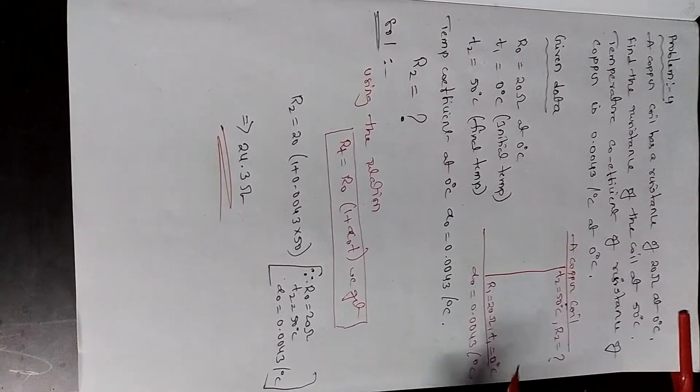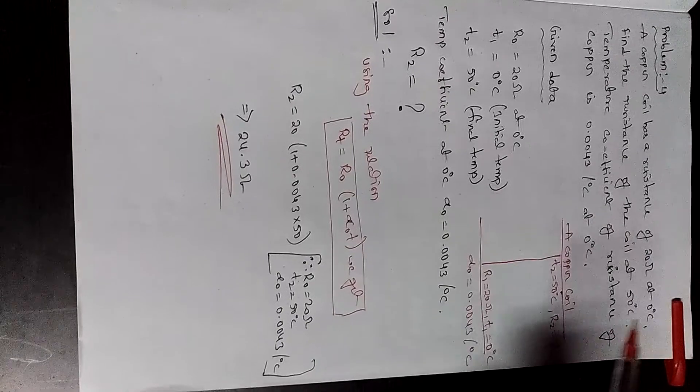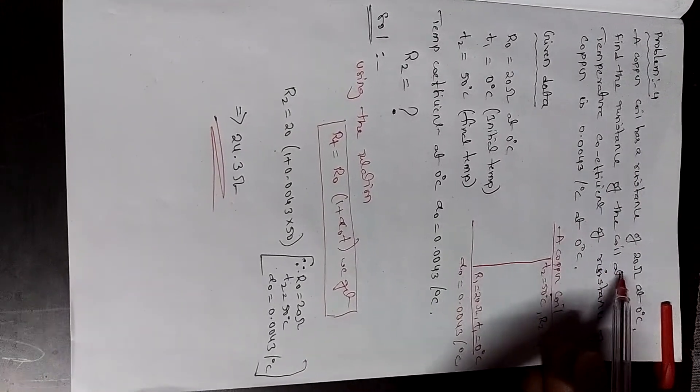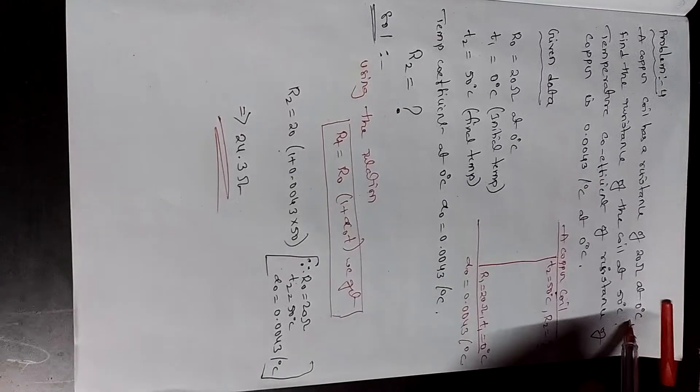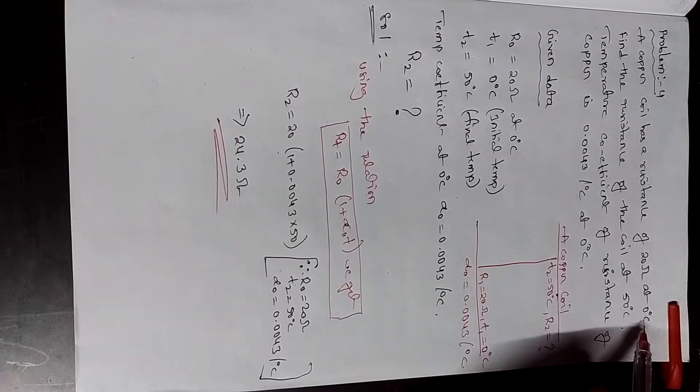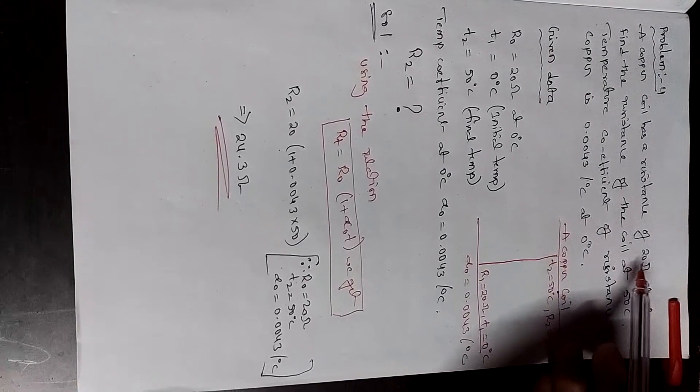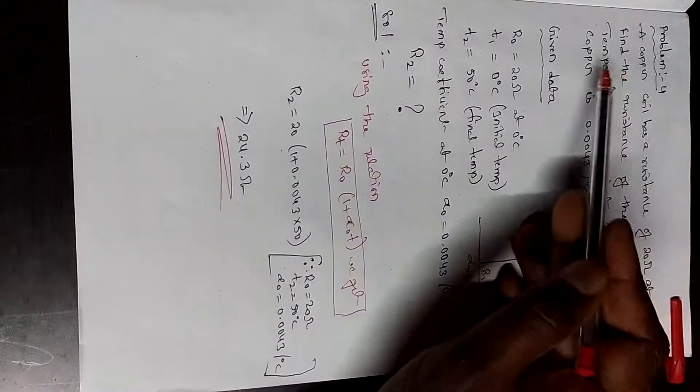Right, now we'll discuss problem four. A copper coil has a resistance of 20 ohms at 0 degrees centigrade. Here, zero degrees is the initial temperature T1, and R1 is the resistance of 20 ohms. We need to find the resistance of the coil at 50 degrees centigrade.